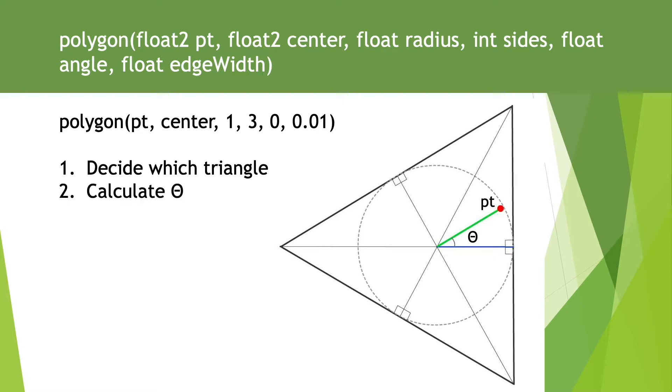2. Calculate the angle between the PT vector, the pixel being rendered, and the line that is perpendicular to the final triangle's side, shown in blue in the diagram. And 3. Adjust the length of the hypotenuse of this triangle based on the cosine of this angle.